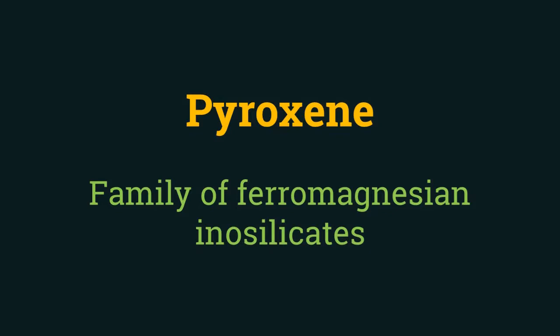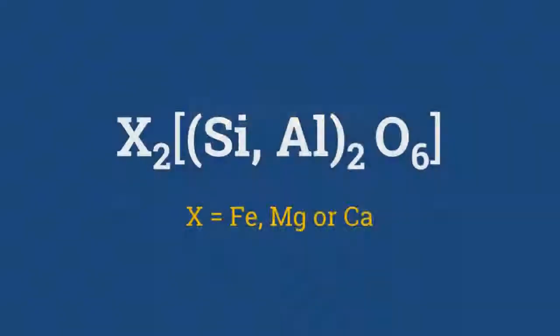Based on X-ray analysis, the crystal structure of pyroxene is shown to be infinite single chains of linked silica tetrahedrons, which makes it an inosilicate. The chemical composition of pyroxenes is X2Si2O6 or Al2O6, where X is mainly iron, magnesium, or calcium.